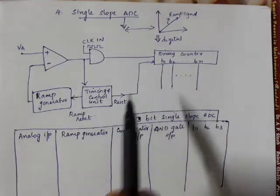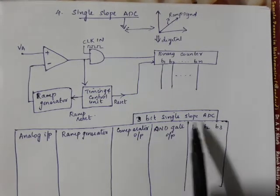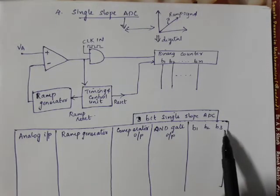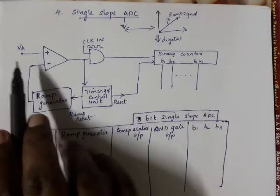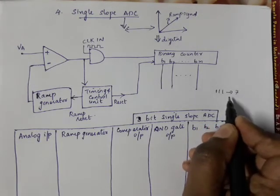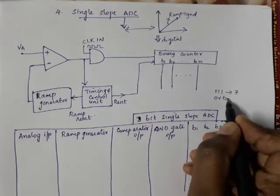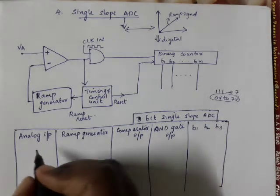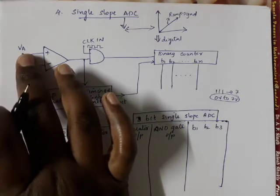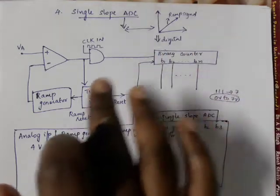Now I am going to design a 3-bit Single Slope ADC. The output is 3-bit: B1, B2, B3. The 3-bit maximum value is 1,1,1 — that is 7. So the analog input signal VN ranges from 0V to 7V. I assume VN is 4V, and I want to find the corresponding digital binary count.